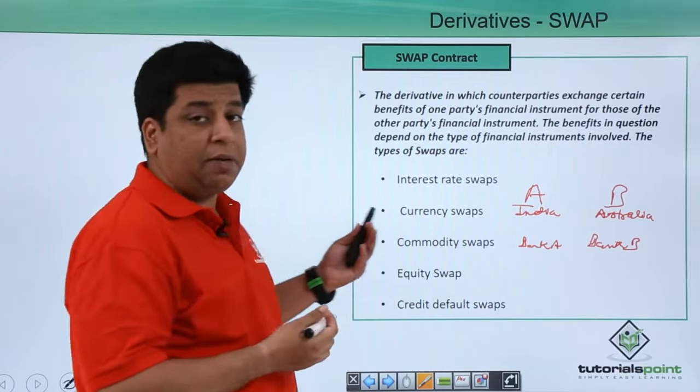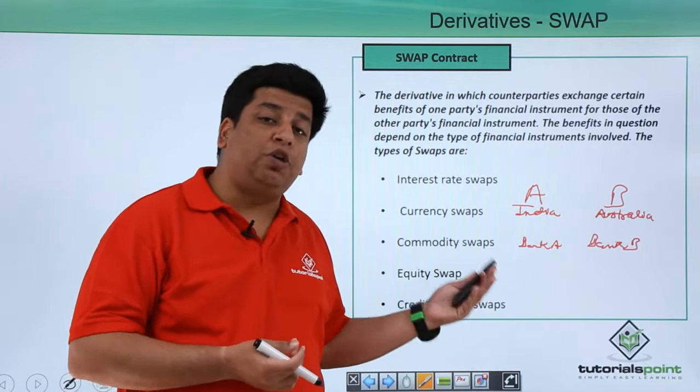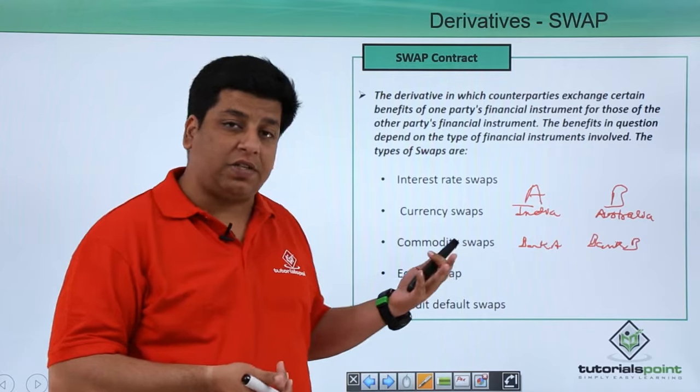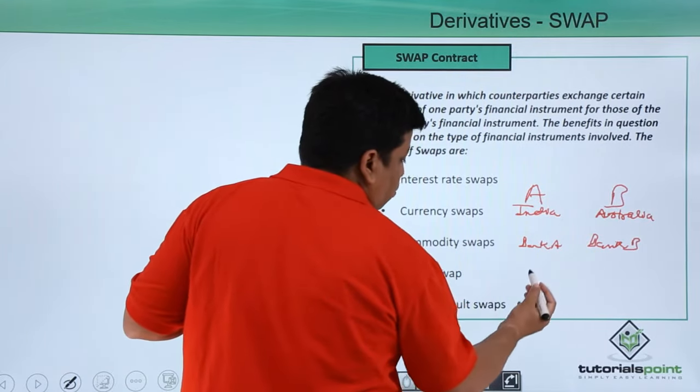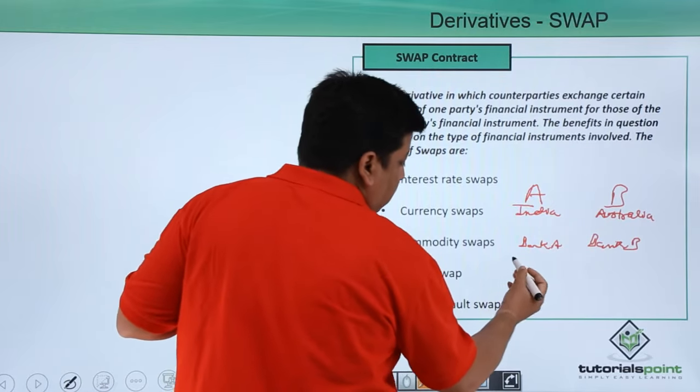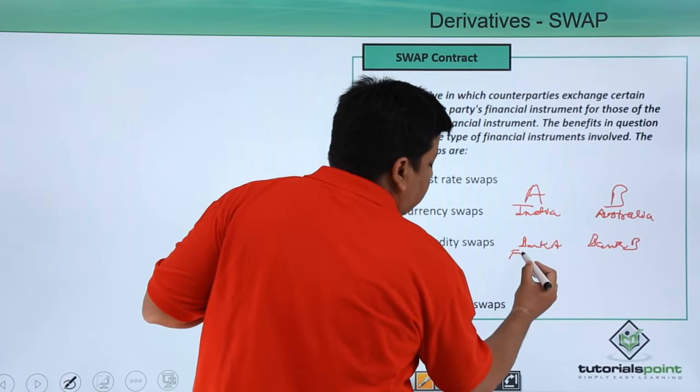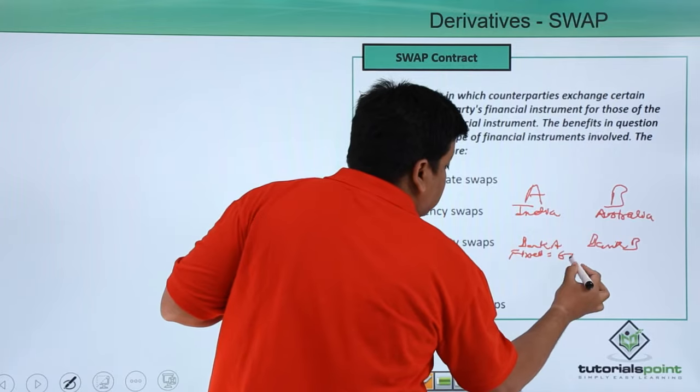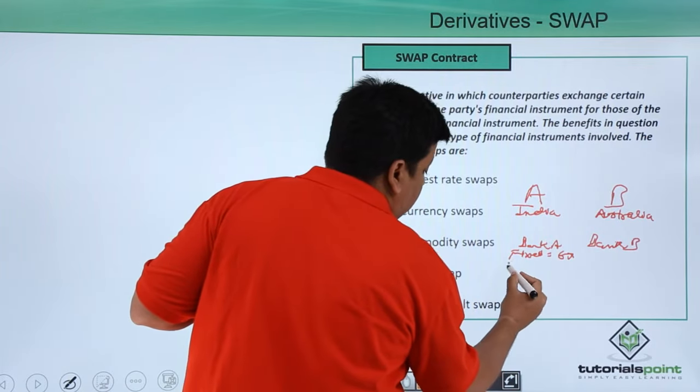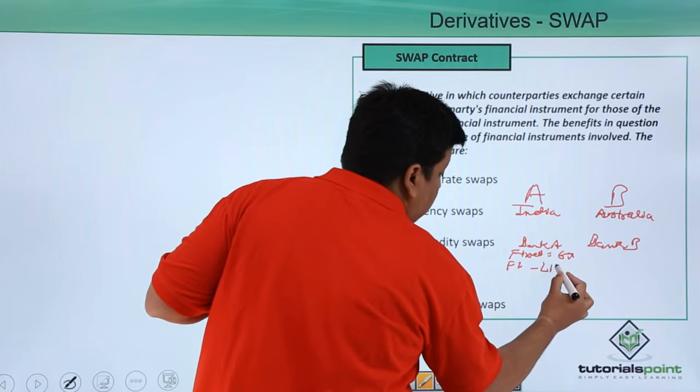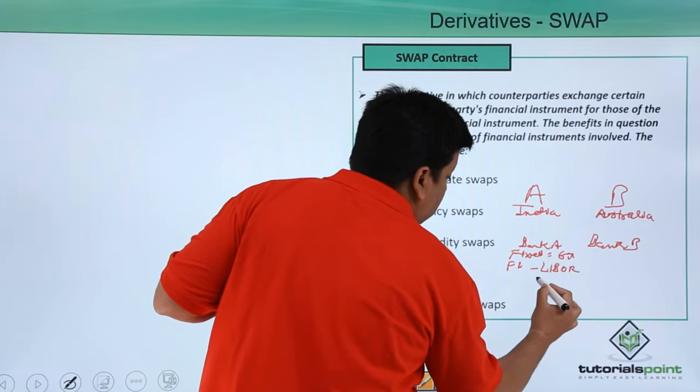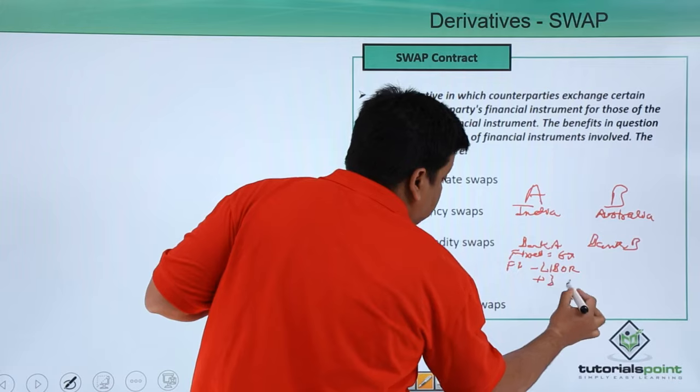Now both A and B would be needing loans from their respective banks. Let's say bank A is willing to give loan to company A at fixed rate of 6% and floating rate of LIBOR plus 3%.